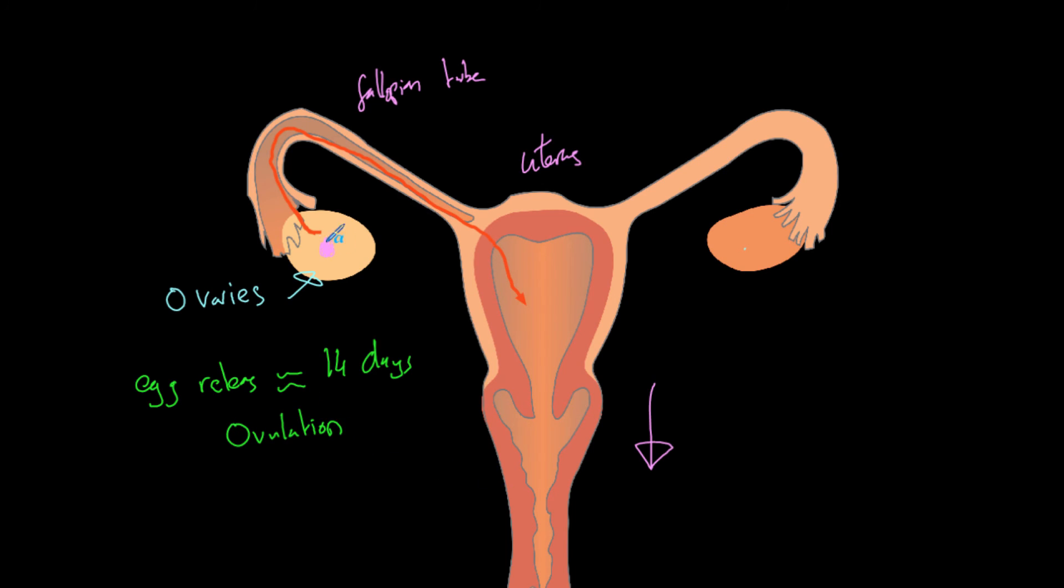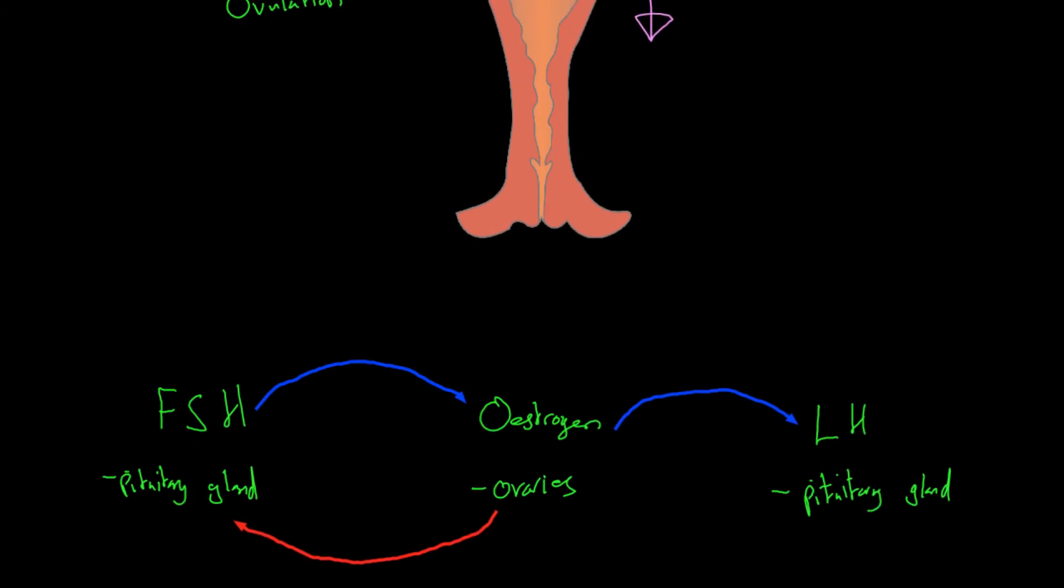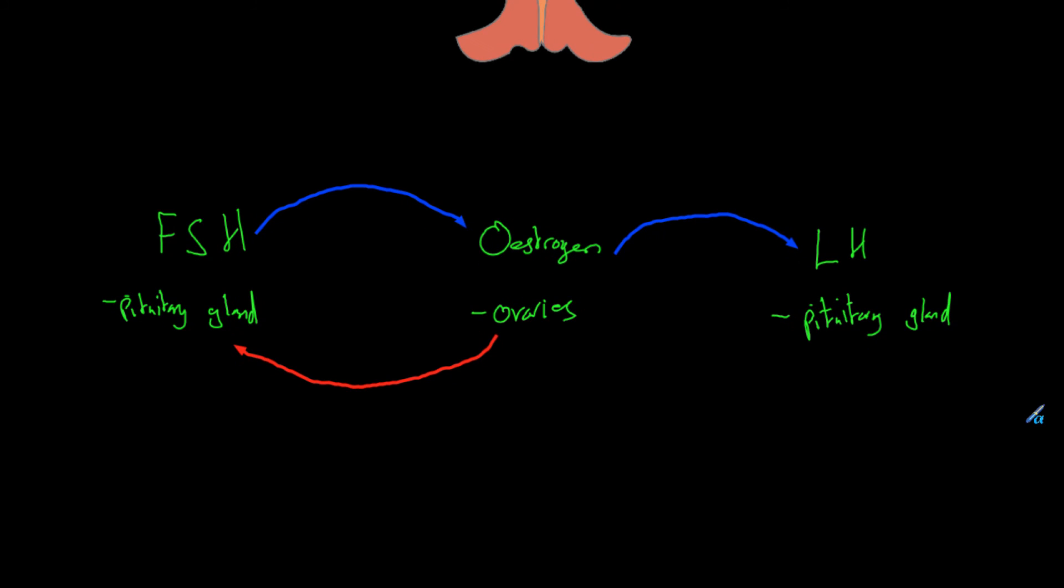Ovulation is the egg being released from the ovaries. It will travel down here and eventually it will end up in the womb. And so this occurs just to get the egg ready to be fertilized by a sperm. If the egg is fertilized by a sperm, then of course a pregnancy will occur and the womb lining is going to stay as it is and get even thicker and allow the embryo to grow and mature.